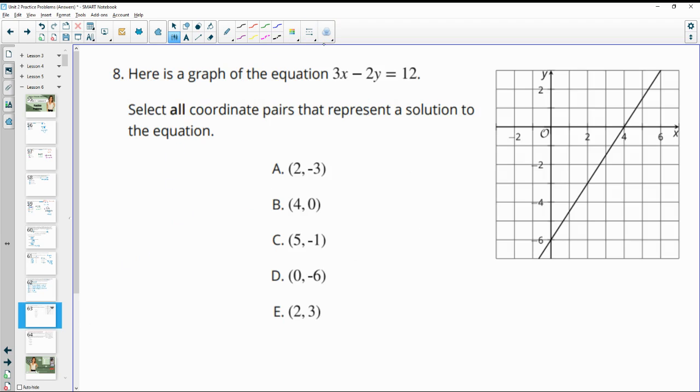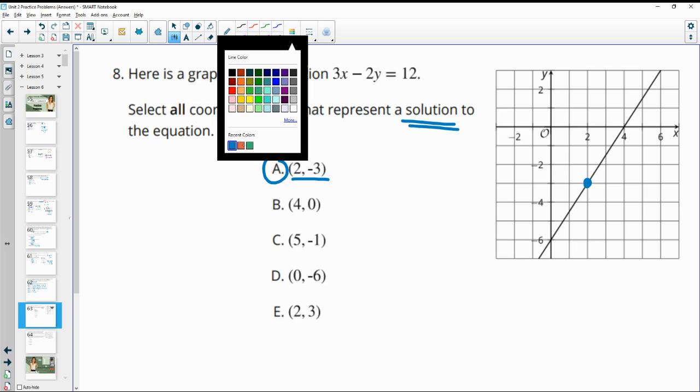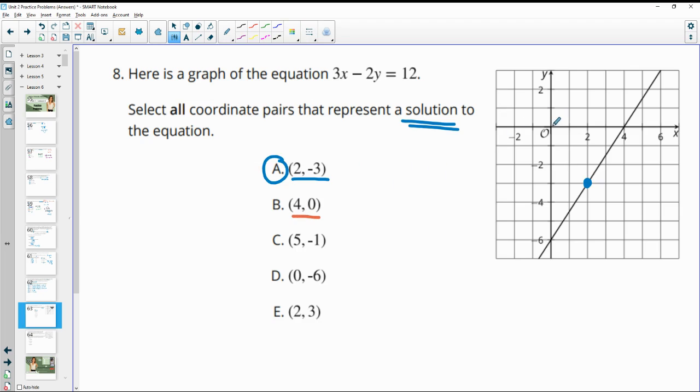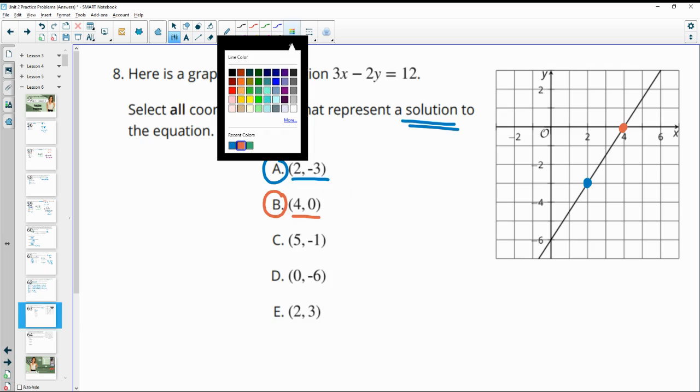Number eight, here's a graph of an equation. Select all coordinate pairs that represent solutions, meaning that they're going to be on the line. So for A, we'd be at 2. So go 2 in the x direction, negative 3 in the y direction. That's on our line. So this is a solution. B is the 0.40. So go 4 in the x direction, 0 in the y. That's on our line. So that's a solution.